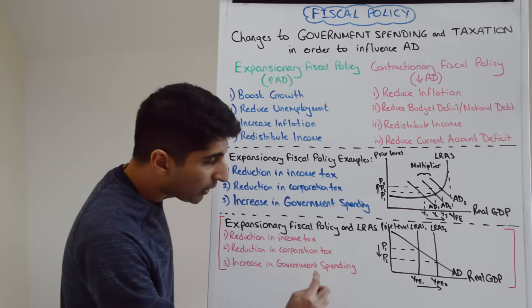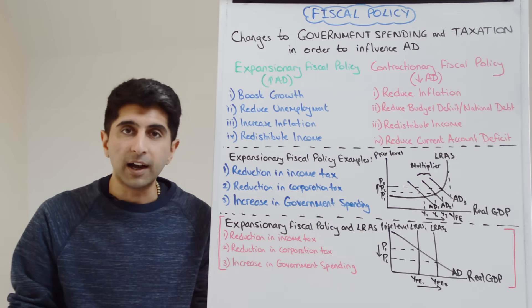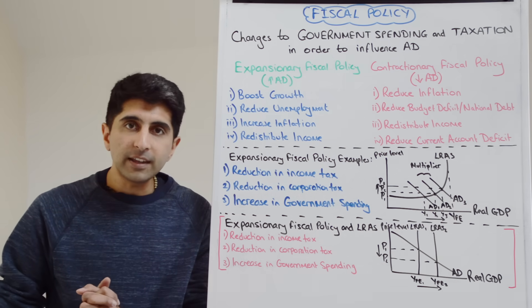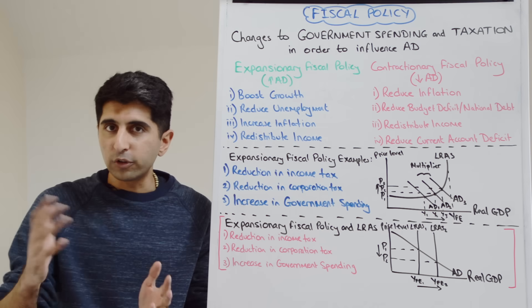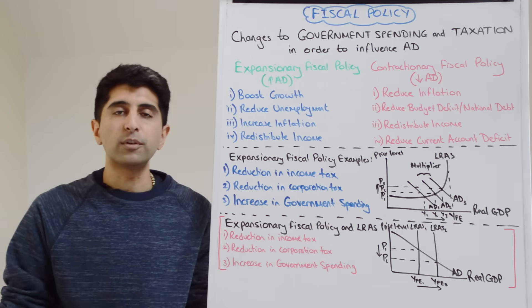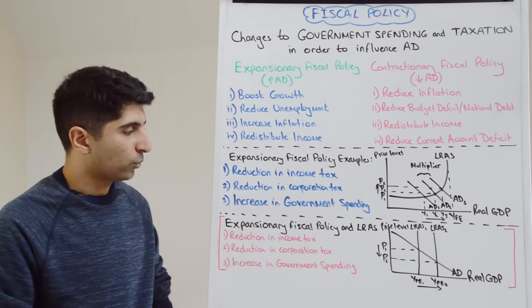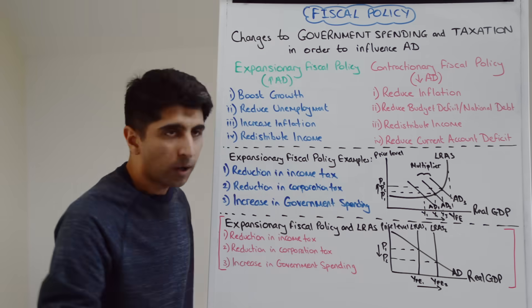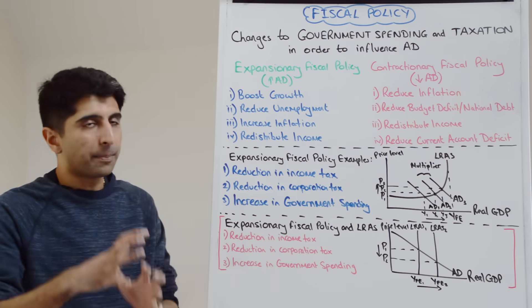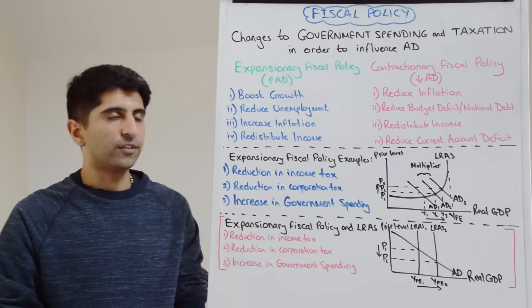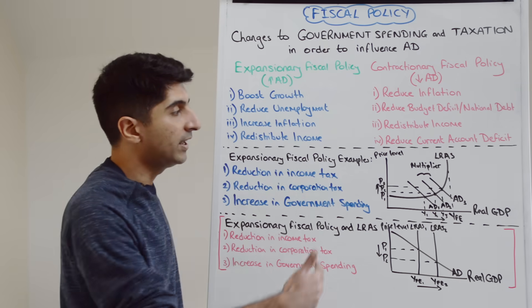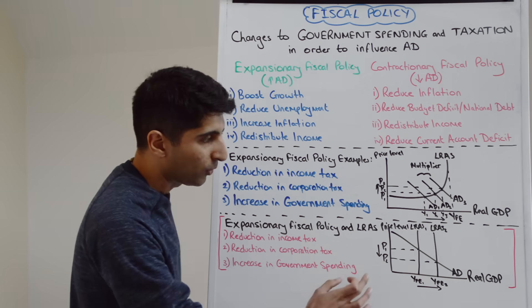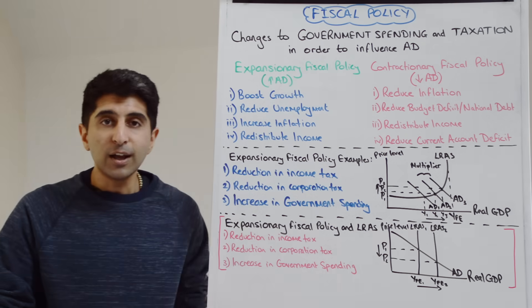Increases in government spending on infrastructure can increase the productive efficiency in the economy and also potentially boost the quantity of capital as well. So there are links to LRS as well, but remember the primary focus of expansionary fiscal policy is to boost aggregate demand — the LRS effect is purely a side effect.